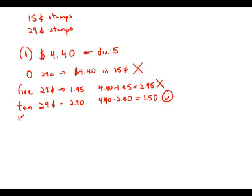If we buy 15 $0.29 stamps, it turns out that that costs $4.35. That leaves us only a thin nickel, and we can't buy any $0.15 stamps with a nickel.